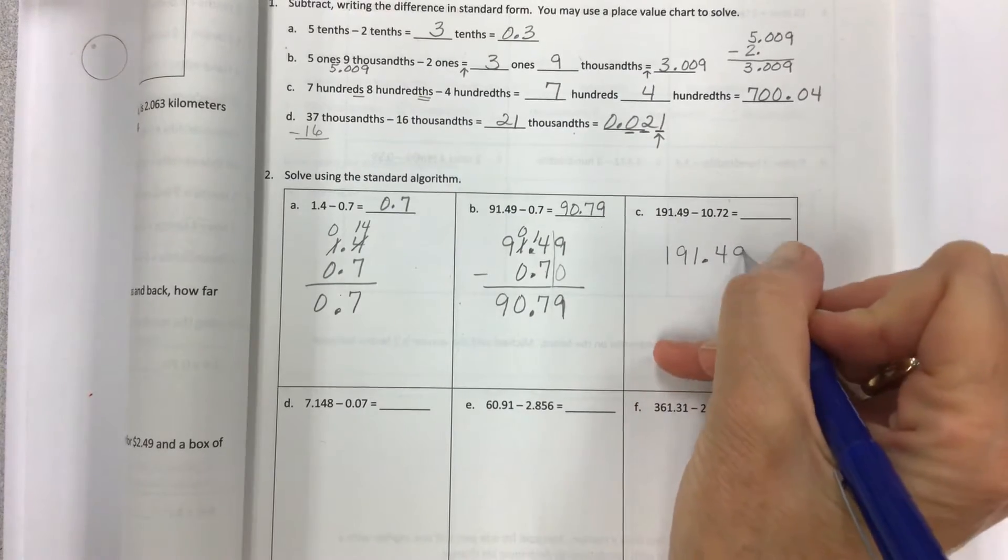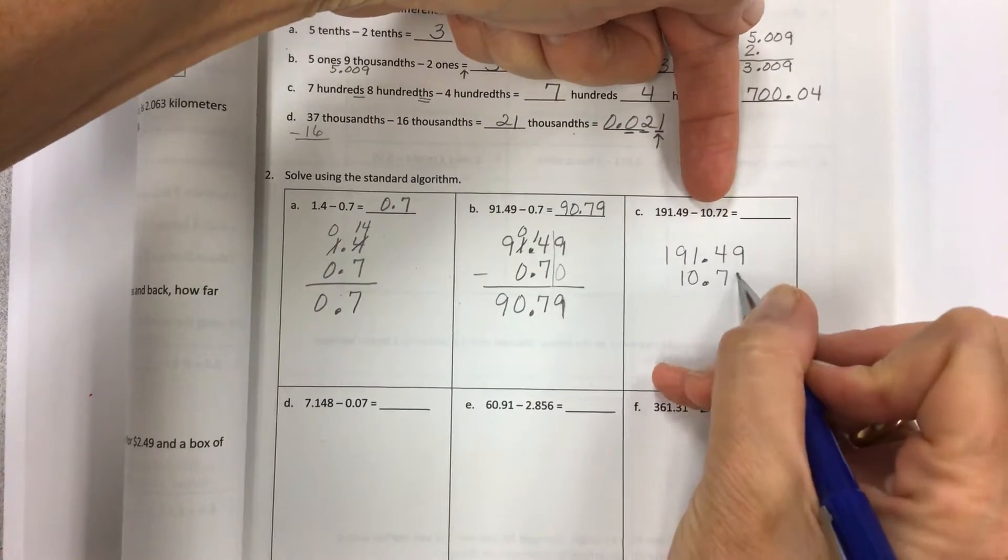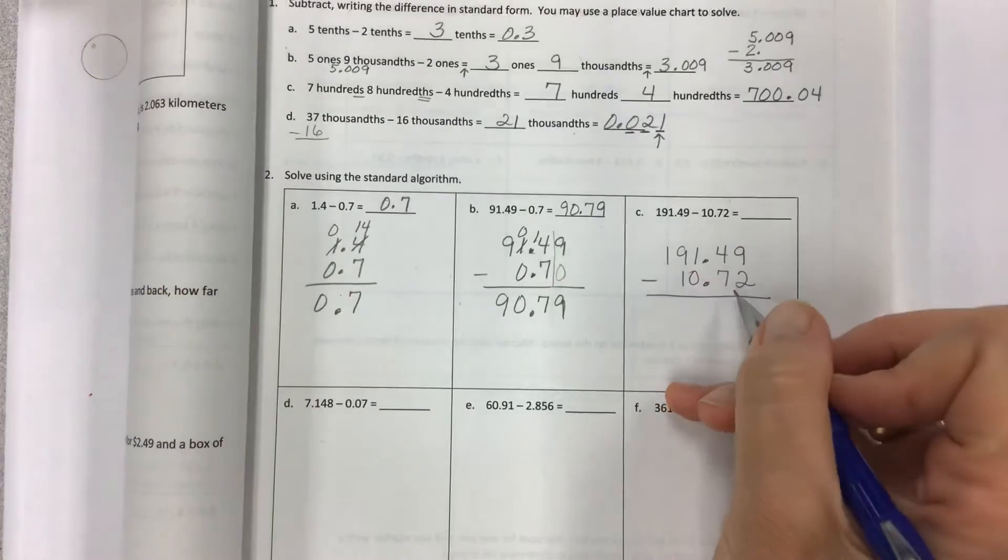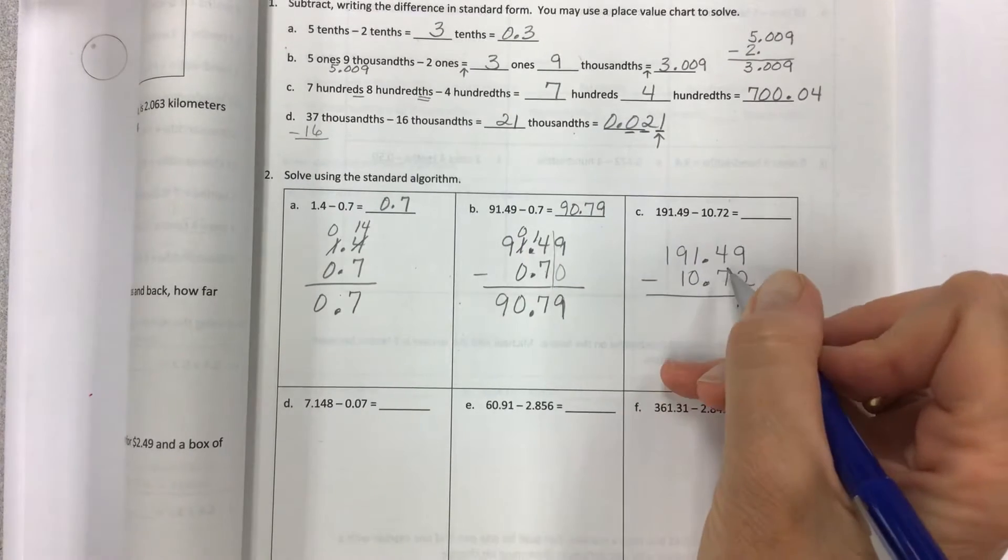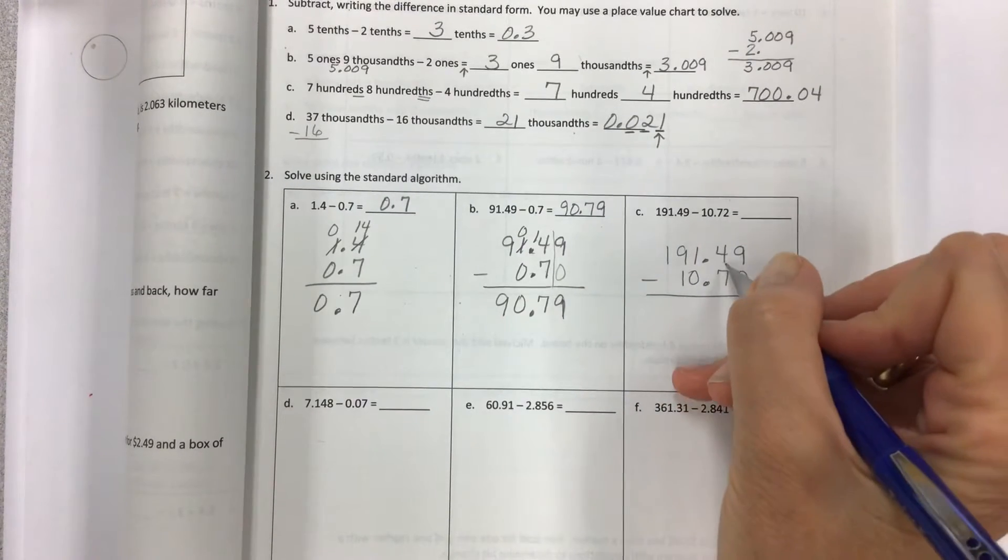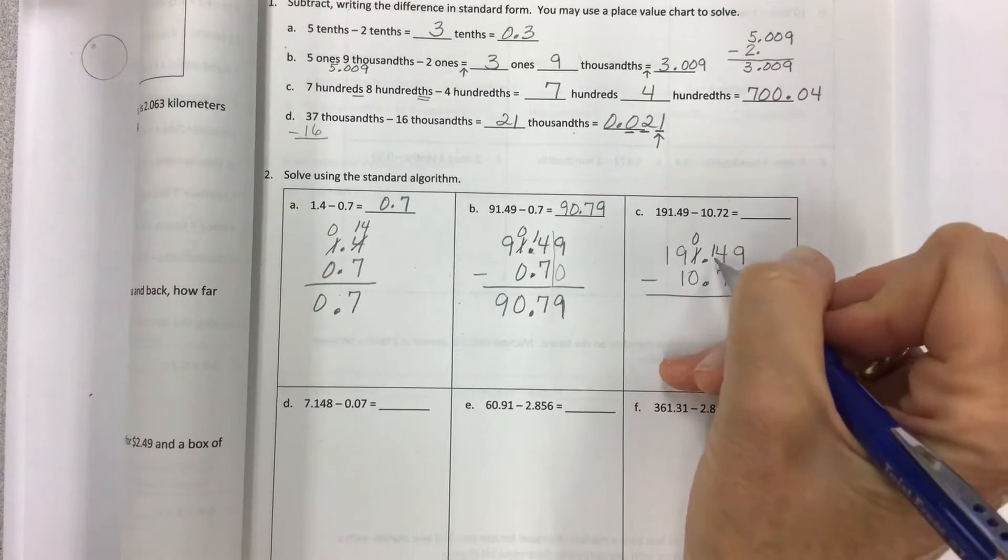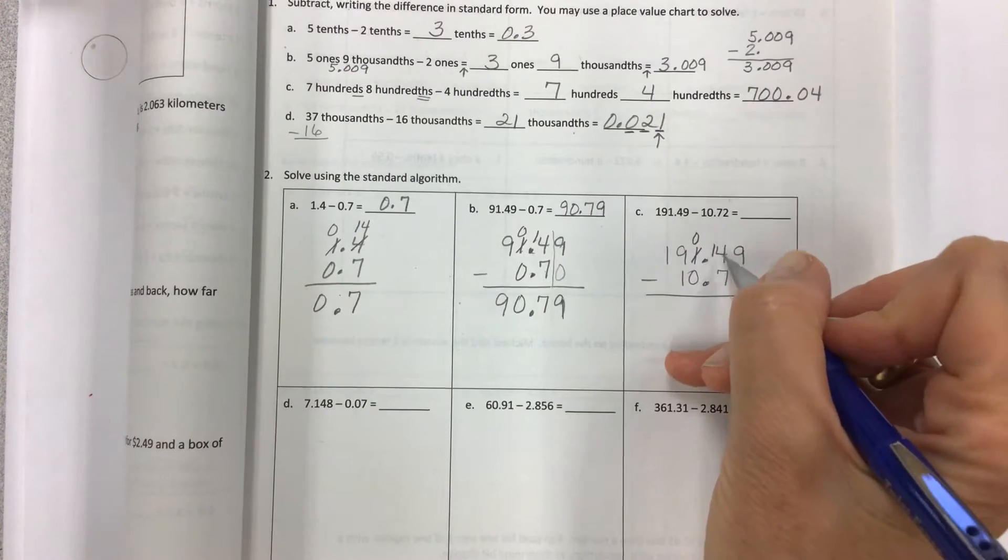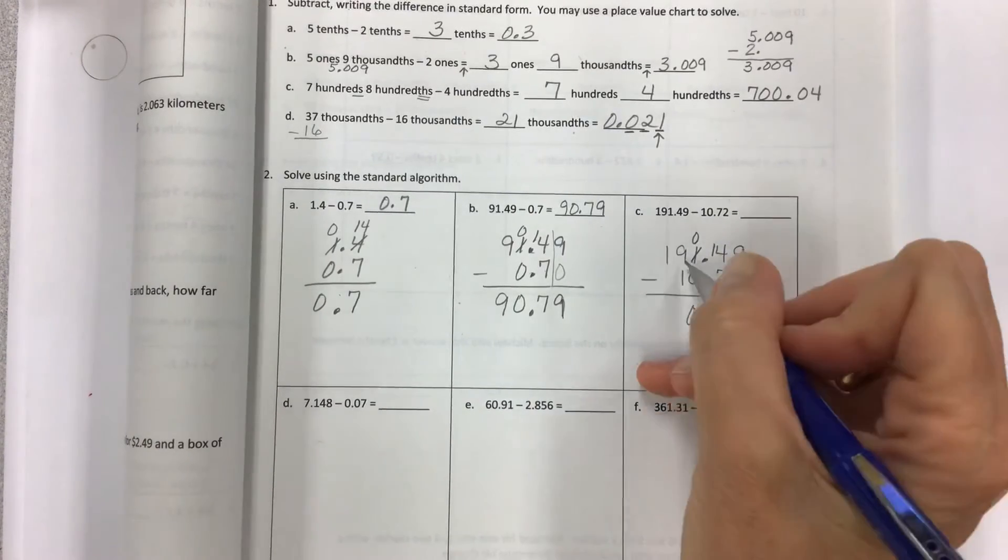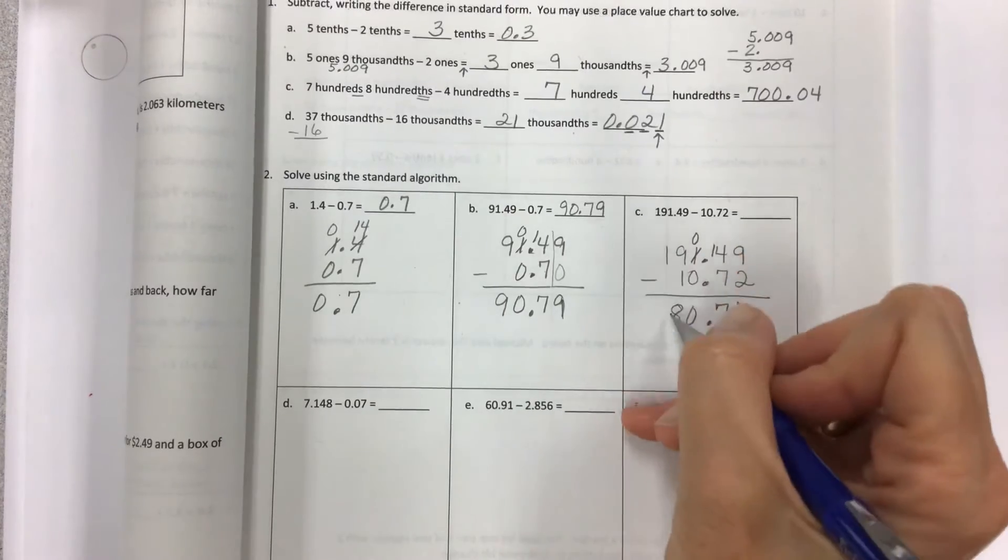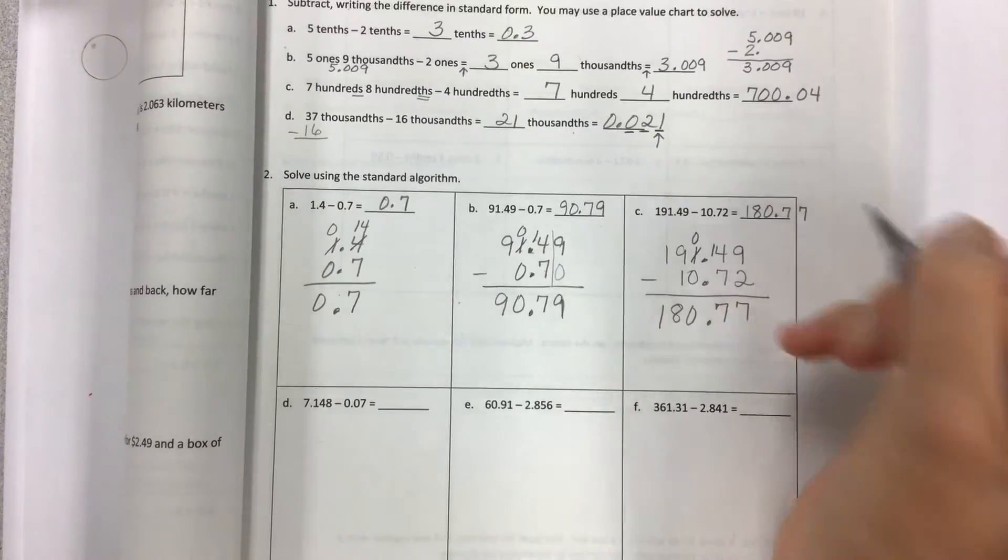Line up carefully. 191.49 minus 10.72. It's all about lining them up. 9 minus 2, 7. No regrouping. 4 minus 7. Again, yes, they're doing it on purpose. Get used to it. Go over here. Take one away. 1 minus 1 is 0. Give this one ten. So you just put a little 1 in front of the digit that was there. I'm using 14 minus 7. I get 7 again. 0 minus 0. 9 minus 1 this time. And then 1 minus nothing. And that gives us 180.77.